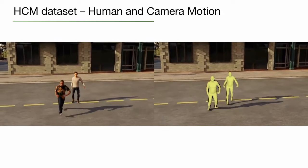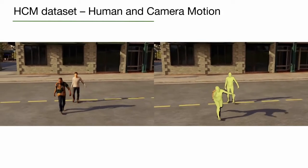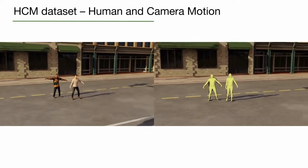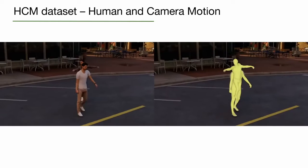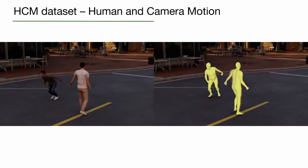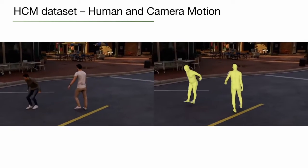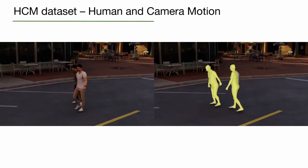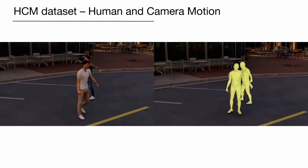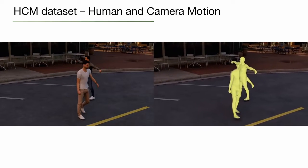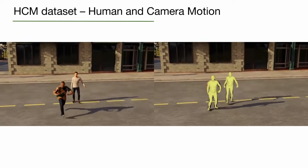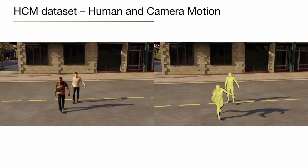In our paper, we also propose a new synthetic dataset for benchmarking human and camera motion estimation from dynamic videos, called the Human and Camera Motion Dataset. We created this dataset since it is difficult to obtain ground truth human and camera poses for in-the-wild videos.